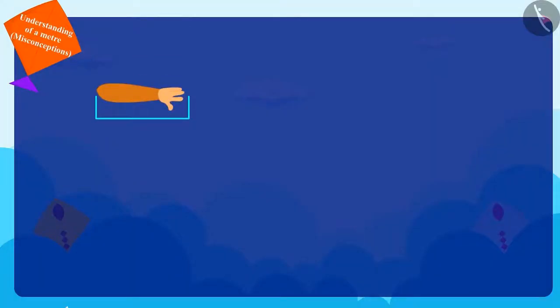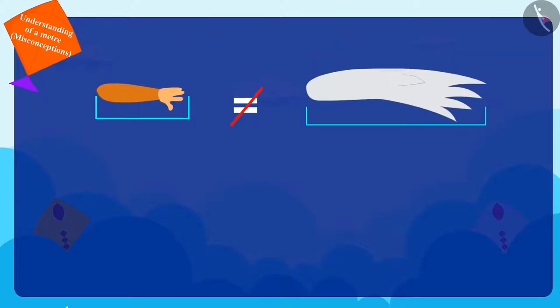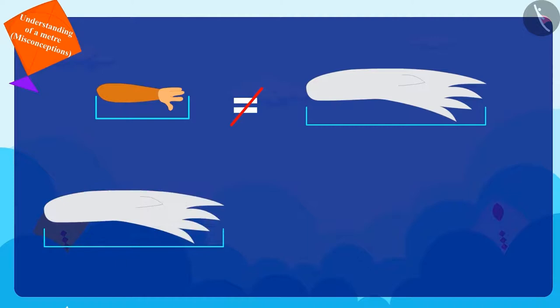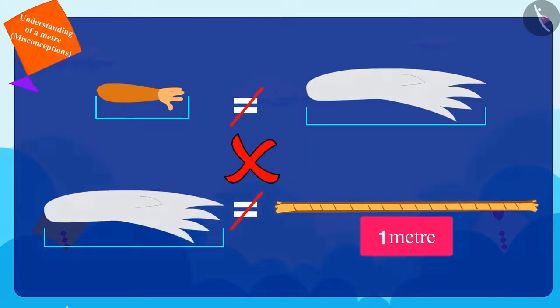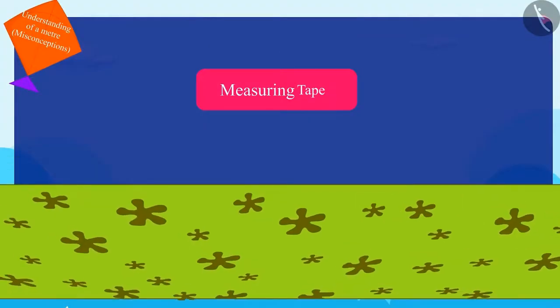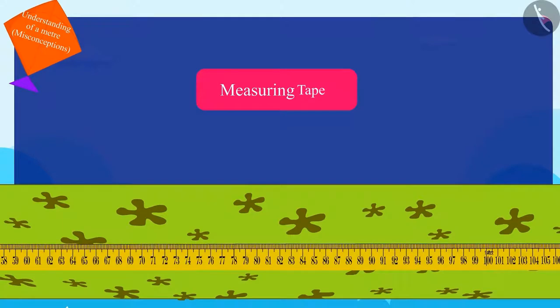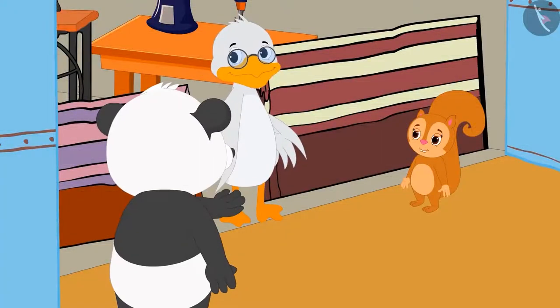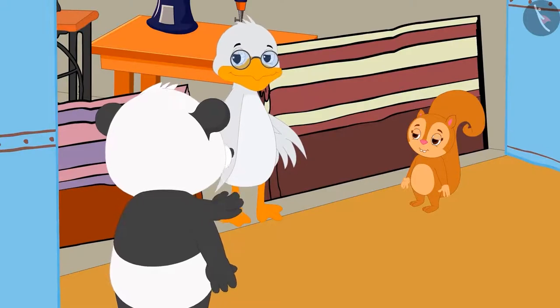For example, the length of her one arm is not equal to the length of uncle's one arm, and the length of uncle's one arm is not the same as one meter. She told uncle that he should measure the material using his measuring tape. Both Golu and uncle understood this.